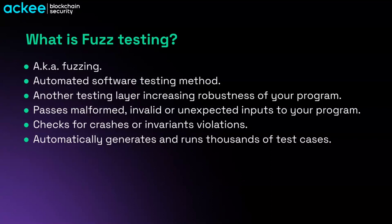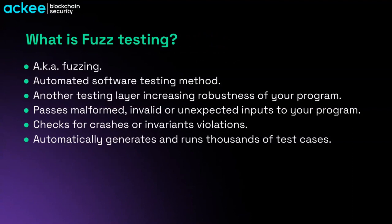An invariant is something that you define in your fuzz test. For example, if you have a deposit instruction, you can say that during the deposit your account balance must only increase. So if during a test the balance decreases during the deposit instruction, the invariant is violated and your test should crash. Using these automated techniques helps you find different edge cases, and the fuzzer can generate basically thousands of different variations.